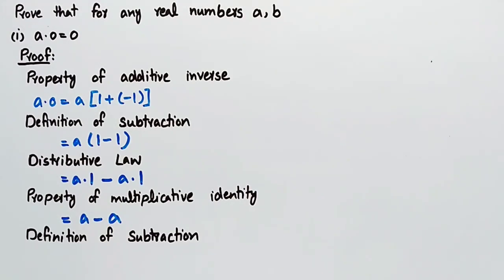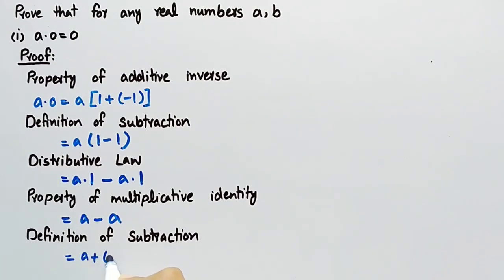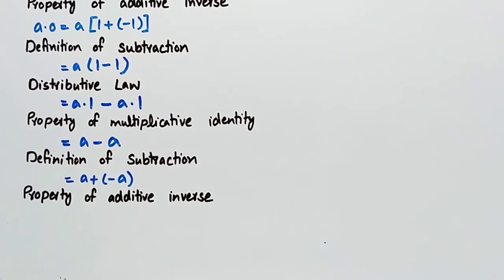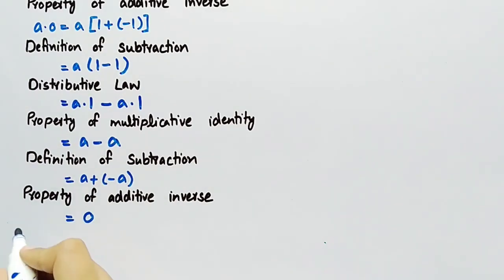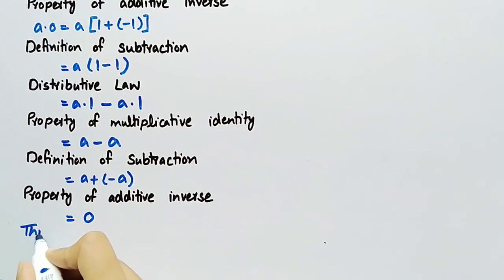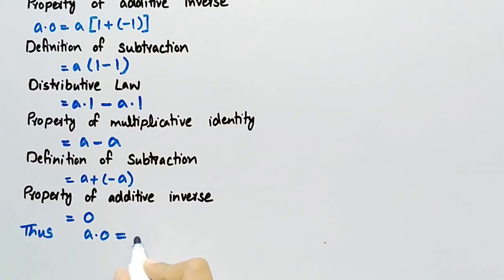By using the definition of subtraction, we can write a − a as a + (−a). By using the property of additive inverse, we can write a + (−a) equal to 0. Thus, we have proved that a·0 is equal to 0.